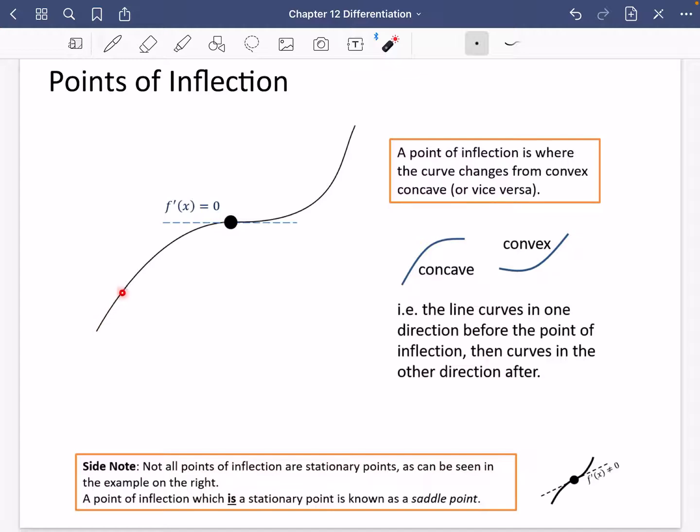So this particular part of the graph here, we do this more in year two, this is where it is concave, and this is where it is convex at this particular point. This point of inflection also happens to have a bit in the middle where the gradient is flat, where it is zero. So the line curves in one direction before the point of inflection, and then it curves in the other direction afterwards. So it's coming like this, it then goes to flat at this point here, and it then comes upwards.